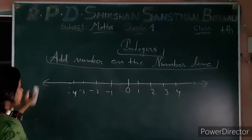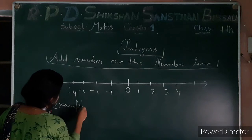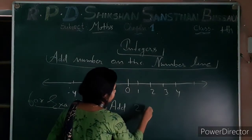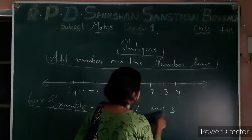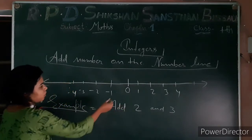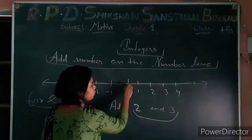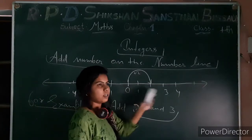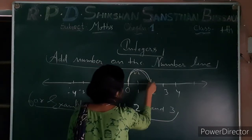For example, we will use addition of: add 2 and 3. Both 2 and 3 are positive integers. First of all, we start from 0. We move to 2 — that is, 0 to 2 — this is plus 2. The arrow is from 0 to plus 2, on the right side.